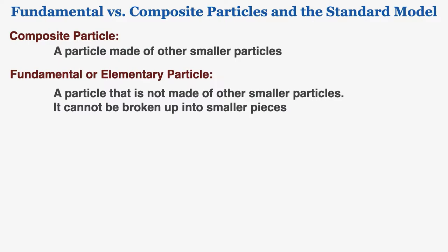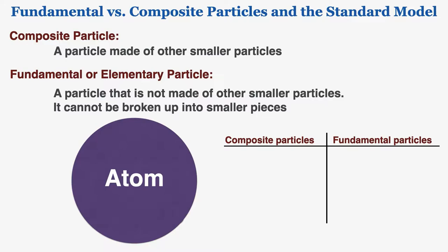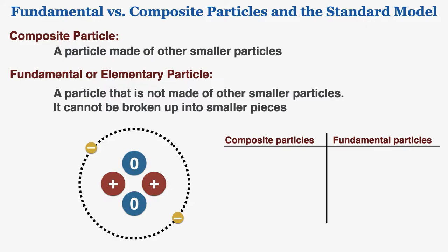A very long time ago, people believed that the atom was a fundamental particle — that you could not split an atom into smaller pieces. But we learned later that atoms are composed of smaller pieces: protons, neutrons, and electrons. Because they can be broken up into smaller pieces, we say that atoms are composite particles.